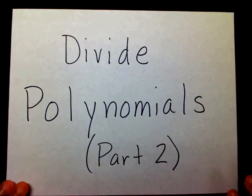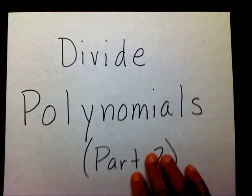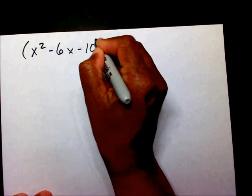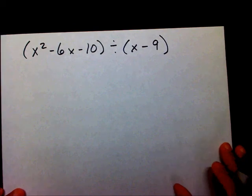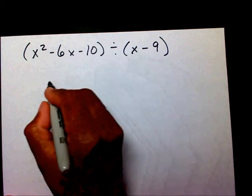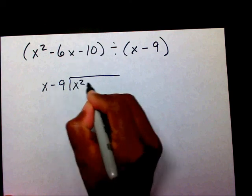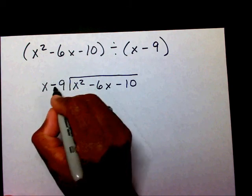Today we're going to continue our segment on dividing polynomials, so let's get started. I have x squared minus 6x minus 10 divided by x minus 9. I'm going to use long division for this. So I'm going to write x squared minus 6x minus 10 divided by x minus 9.